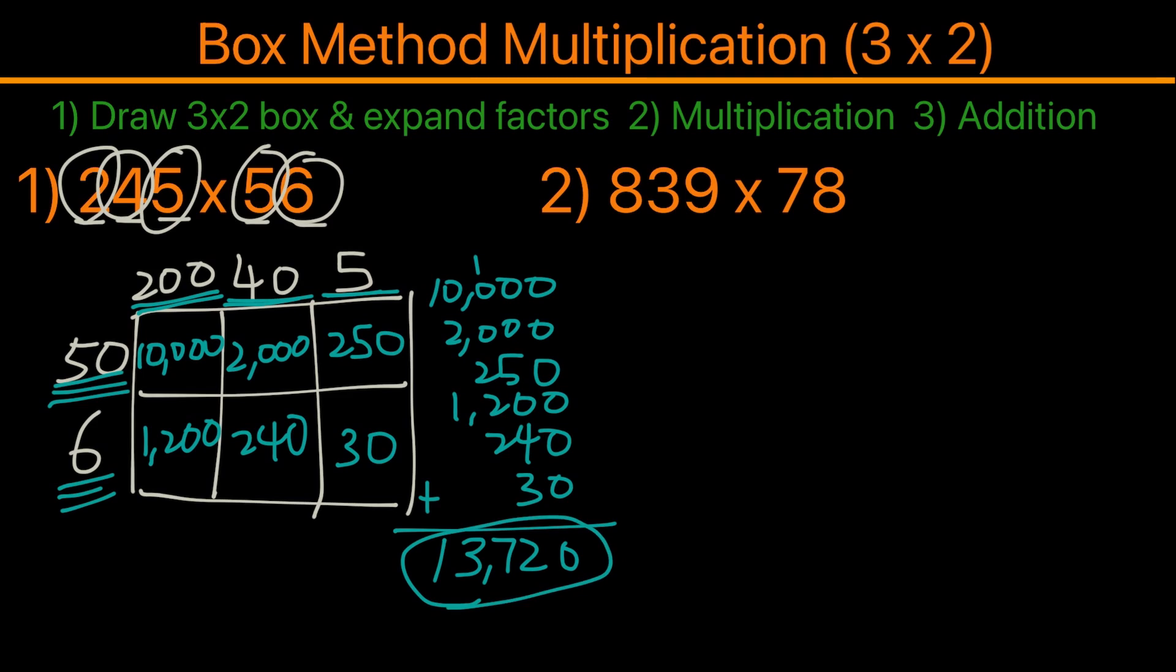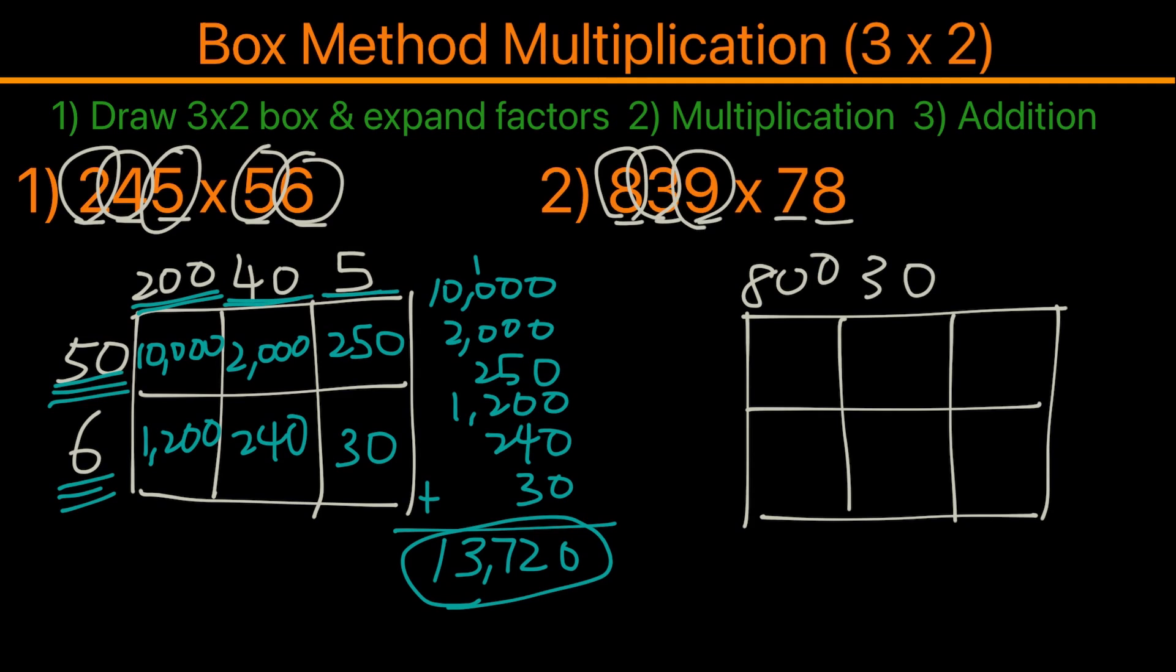Now let's try the same method for the second example. Our second example is 839 times 78. So here we're gonna go ahead and again draw out a 3 by 2 box. There are three numbers multiplying by a two-digit number. So here's a box with two rows and three columns. Again, the 8 in 839 is 800, and then the 3 is 30, and 9 is in the ones place, and 70 will be here and the 8 will be here.